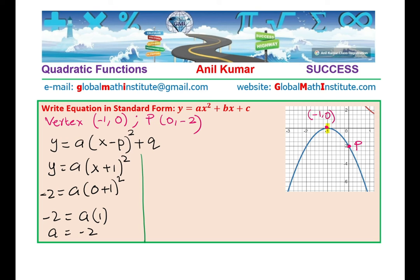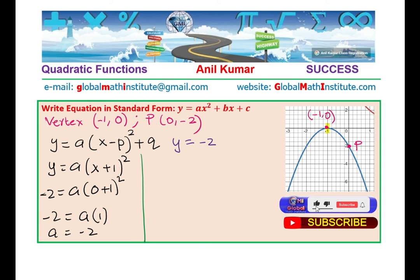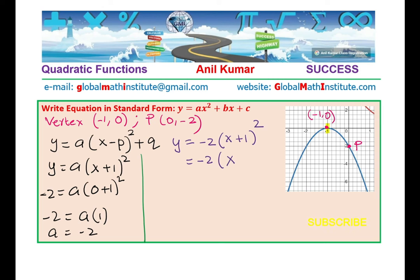Since A equals minus 2, the equation is y equals minus 2 times (x plus 1) squared. Expanding: (x plus 1) squared is x squared plus 2x plus 1, so opening the brackets gives minus 2x squared minus 4x minus 2. Therefore y equals minus 2x squared minus 4x minus 2 is the equation in standard form.